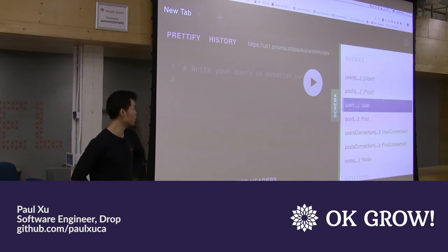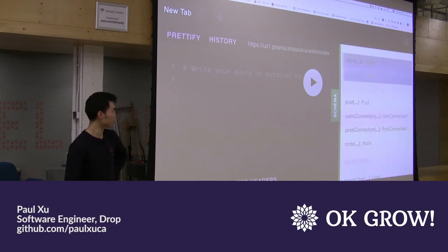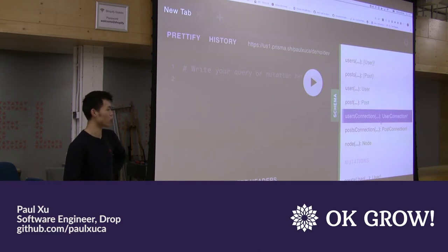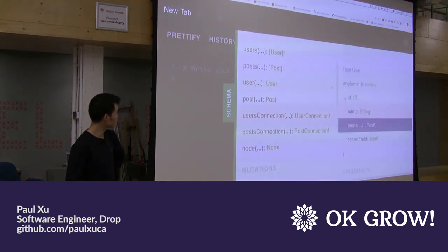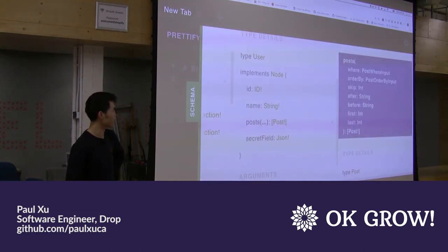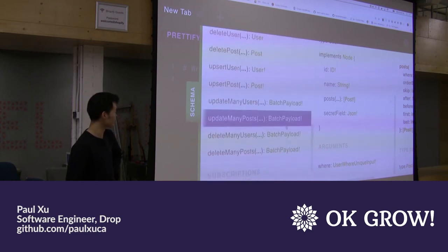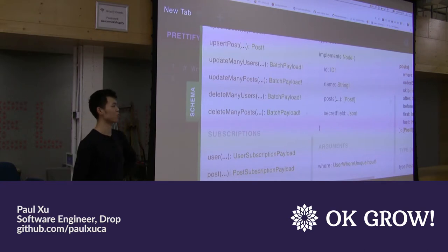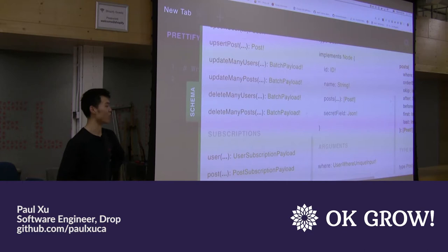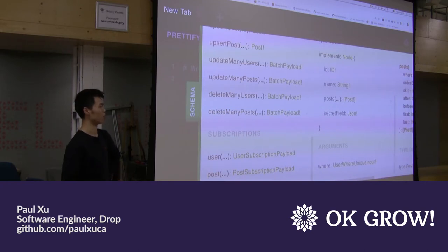Out of the box, it gives you queries like fetching a user by ID or by any attribute, plus pagination over all users or all posts. You can also grab a user's posts with filtering and querying operations. On the mutation side, you get all basic CRUD operations — creating, deleting, updating. It also gives you subscriptions, so you can subscribe to when a new user or post is created, or when a user creates a new post. Just by declaring two simple types, we get all of these operations for free.